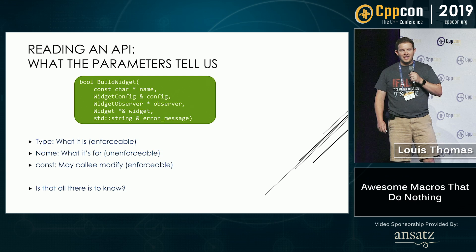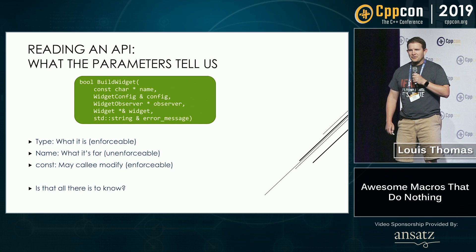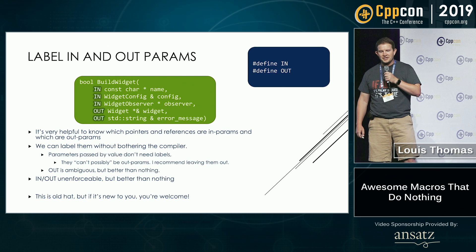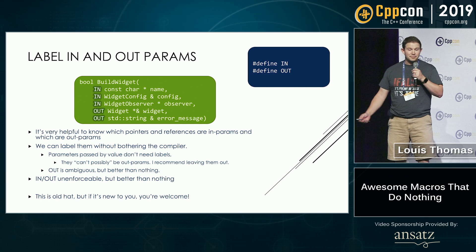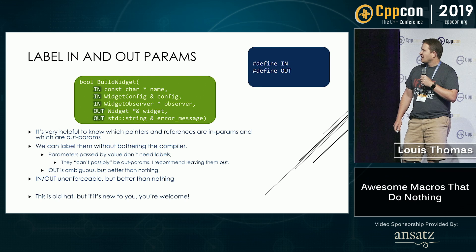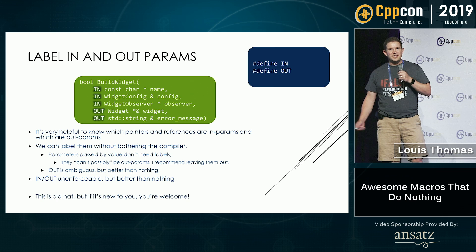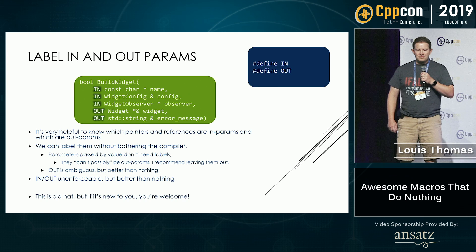Is there anything else we need to know before we call this? We have this interesting function that seems to be building a widget, but it's returning a Boolean. So where's the result? We've got five pointers — which one's important? It would be really helpful if we could label which parameters are in parameters and which are out parameters. We can use a pound define where we just pound define a word to be nothing, put those in front of the parameters, and it doesn't bother the compiler at all. But we get to see whether it's an in or out parameter. It's not enforceable, but it's better than nothing.